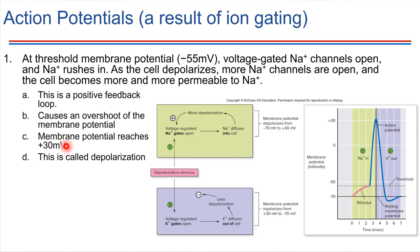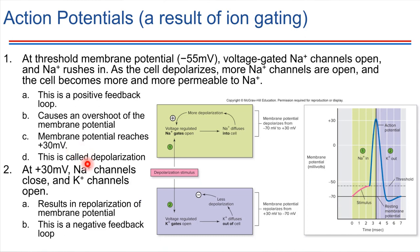Reaching plus 30 millivolts is a triggering event that causes the positive feedback loop to come to an end. The ball and chain swings into place, closing off the sodium channels. At the same time, the voltage-gated potassium channels open up, resulting in repolarization of the membrane. Potassium moves out of the cell, bringing the potential back down. This is a great example of a negative feedback loop — it's bringing things back to the normal resting condition.